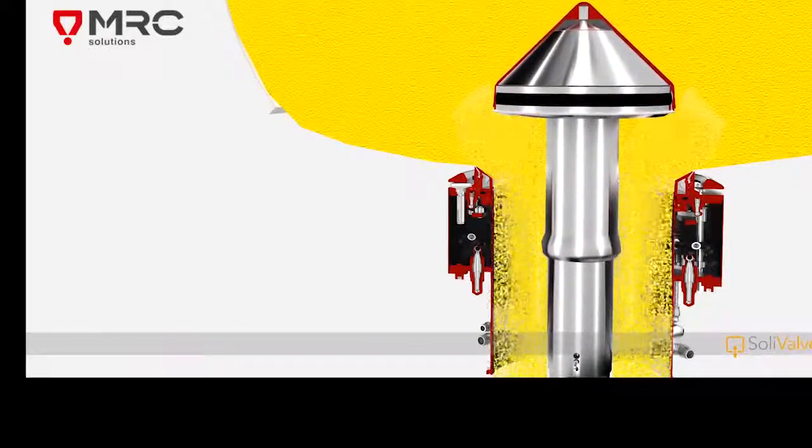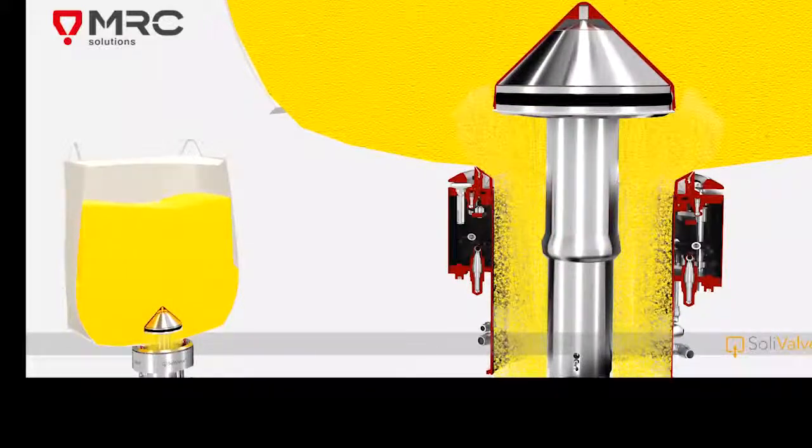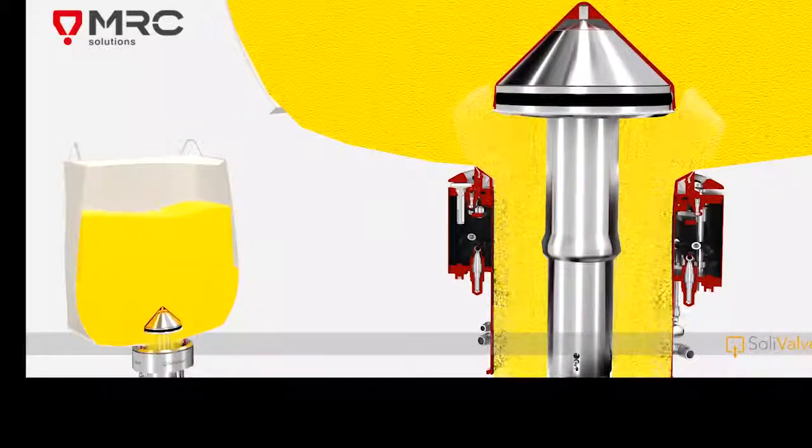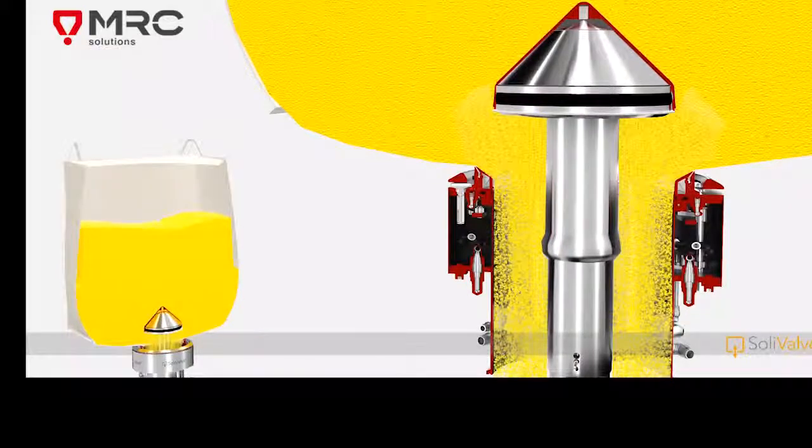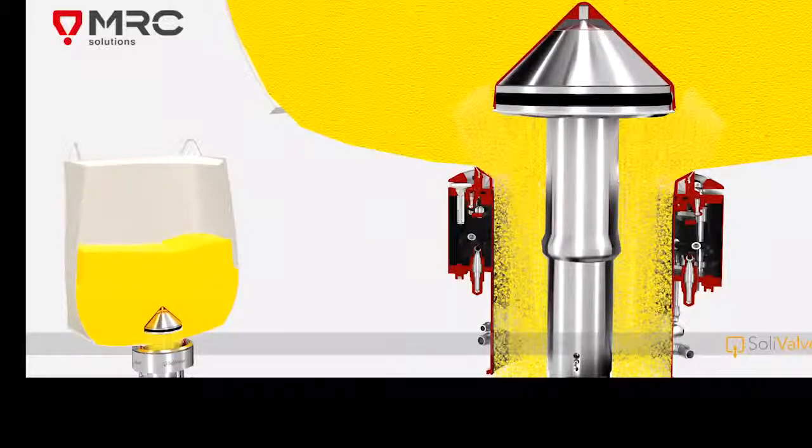The passive cone valve is lifted by the active cone probe and the product is discharged in a controlled manner. Because of its conical shape and vertical movement, the cone valve reliably prevents any bridging and segregation of powder.